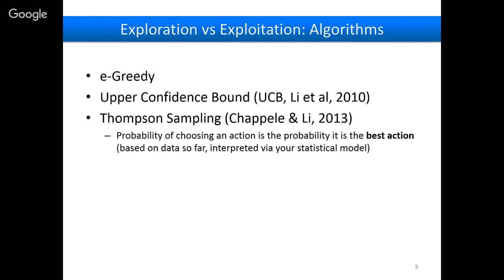Thompson sampling is typically a Bayesian algorithm where the probability of choosing an action is the probability that it's the best action based on data so far. If you know nothing at all and have two explanations, you present them 50/50. But say you've assigned explanations to 50 people and one has a mean rating of 6.5, the other 7.1 — Thompson sampling might assign a 35% chance to explanation one and 65% to explanation two. The key thing is you're constantly updating a weighted probability distribution — always randomizing but weighting based on evidence.